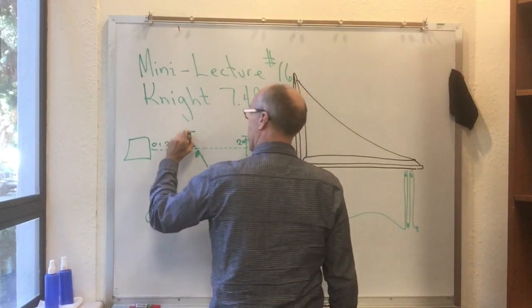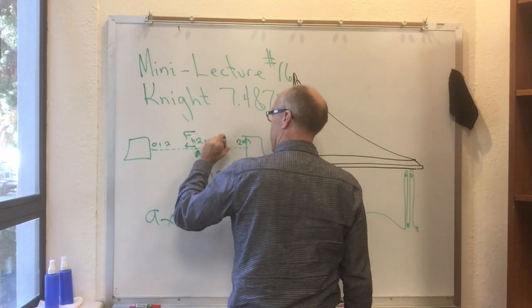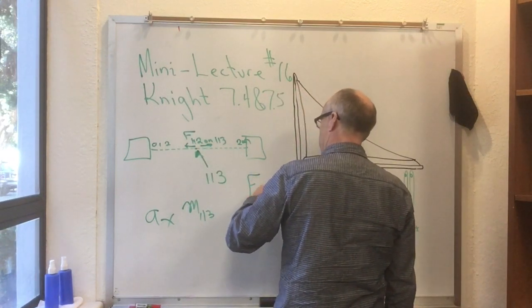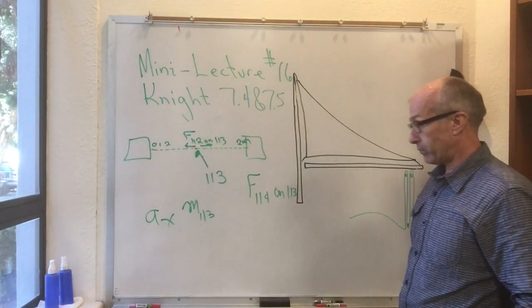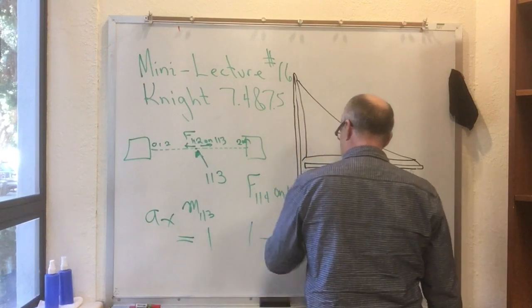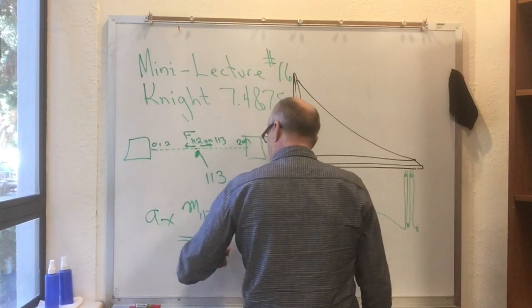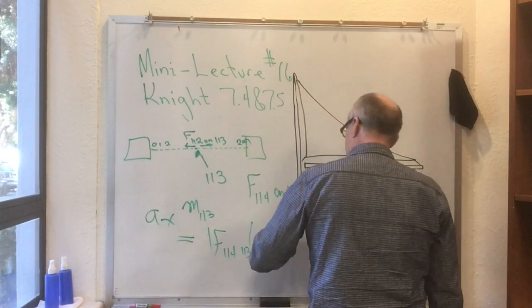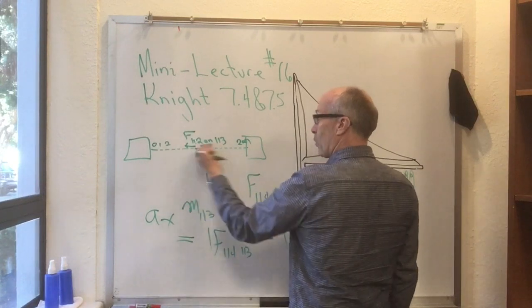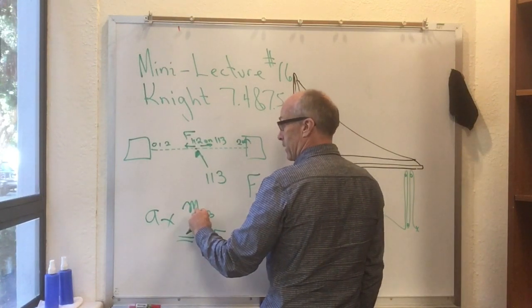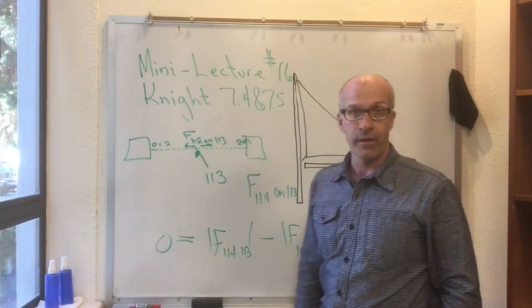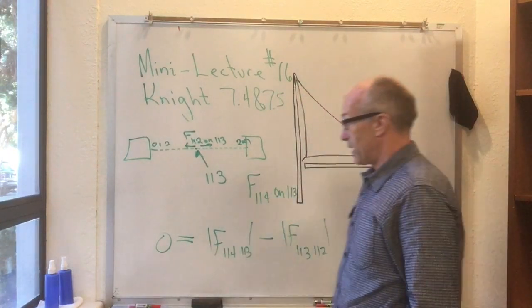And A sub X times M113 is equal to whatever the force is on this end of this thing, which would be the force of chunk 112 on chunk 113. And then there would be the force of chunk number 114 on chunk number 113. And so then we'd have something like AX times M113 is equal to, and I'll put this in absolute so I don't have to worry about the signs. It's equal to the absolute F 114, 113 minus F 113, 112. But now here's where the masslessness comes in. If I can neglect the weight of this thing, and I can neglect the weight of the individual chunk, then this left hand side is zero. I don't care how much that chunk 113 is accelerating. If I can neglect its mass, then the left hand side can be treated as zero.